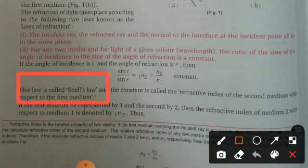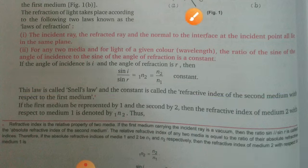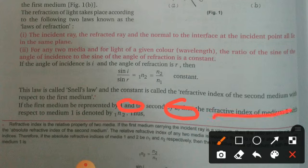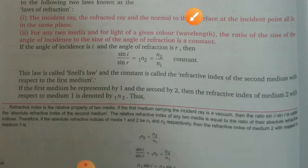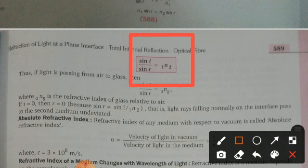This above formula is called Snell's law. If the first medium is represented by 1 and the second medium is represented by 2, then the refractive index of medium 2 with respect to medium 1 is denoted by ₁n₂. So sin i by sin r equals ₁n₂.